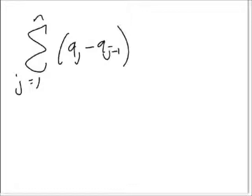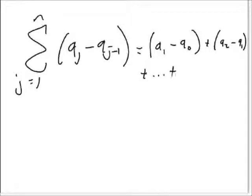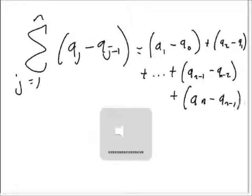Well, let's just write out term by term. So we have first term, a_1 minus a_0. You see that by the j and j minus 1. Plus a_2 minus a_1 plus, and that's going to continue. We're going to have a_{n-1} minus a_{n-2} plus a_n minus a_{n-1}.